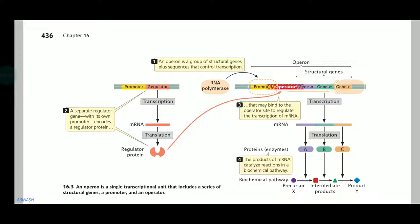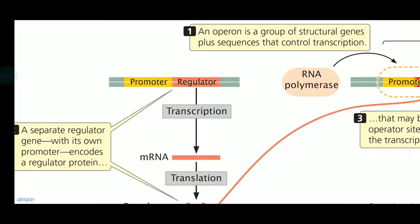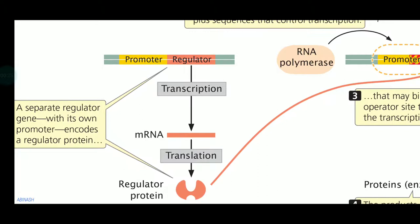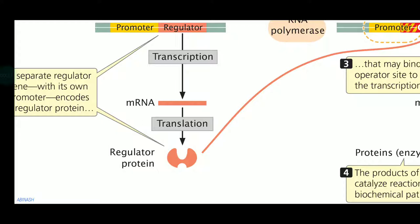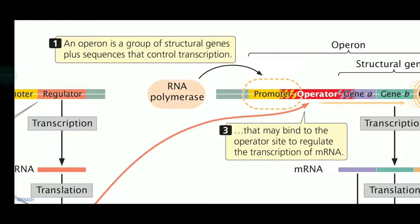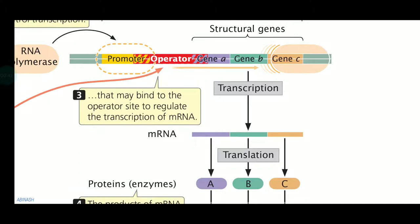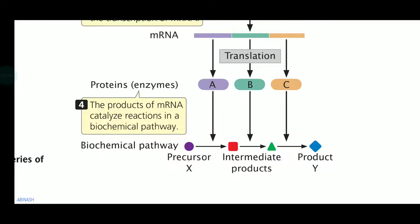In the figure you can see the promoter region, which is regulated by a regulatory region. When the RNA polymerase is bound with the regulator, it forms transcription and then translation to the regulated protein. This regulated protein binds to the operator region, which inhibits RNA polymerase from moving from the promoter region towards the structural gene to undergo transcription, which will be translated to protein molecules utilized for catalytic processes of biochemical pathways.